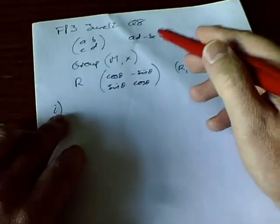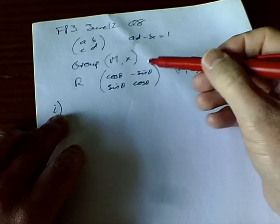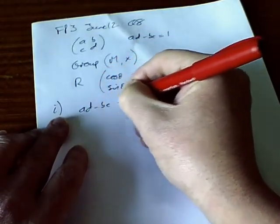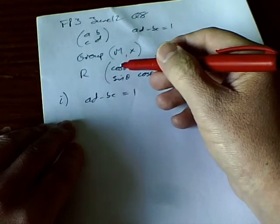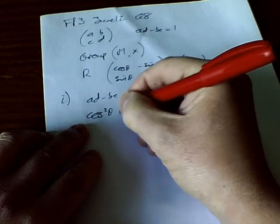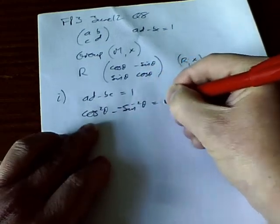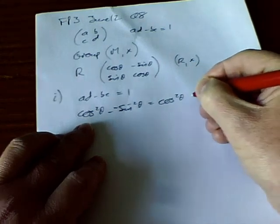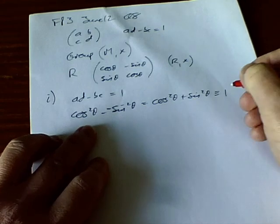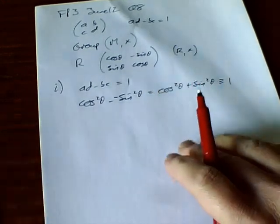First, let's check that the condition AD minus BC equals 1 applies to the matrices in R. So AD minus BC equals cos²θ minus (minus sin²θ), which gives cos²θ plus sin²θ, and we know that always equals 1 — that's probably the first trig identity you ever learn.